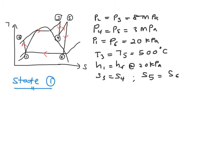So your state 1 is P1 is equal to 20 kPa and your H1 must be your HF, which is equal to 251.42 kJ per kg.